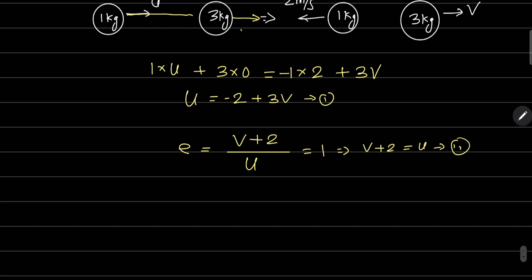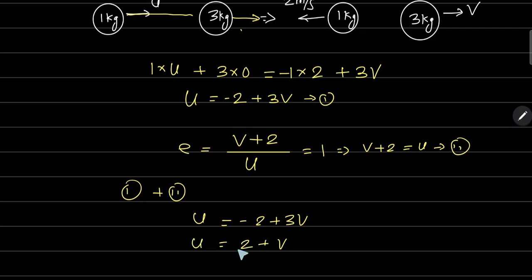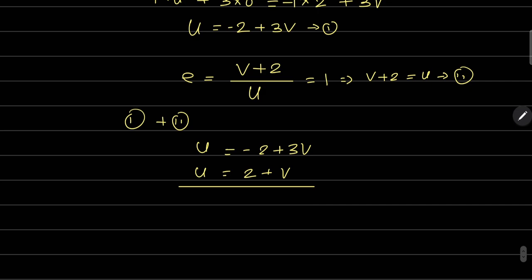अब equation 1 और 2 को add करें। u = −2 + 3v और u = 2 + v। Add करने पर: 2u = 4v, तो v = u/2 मिला।